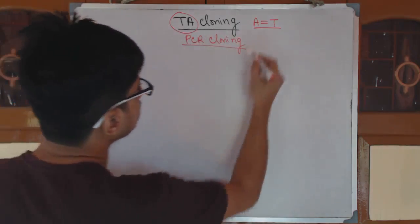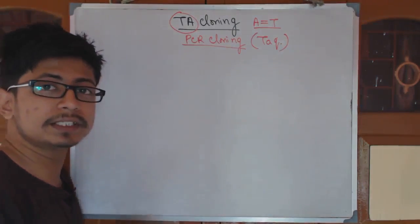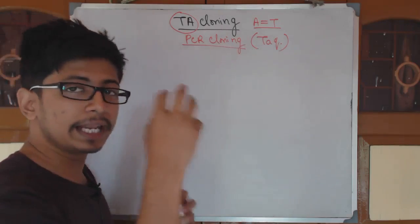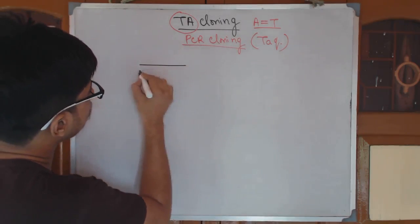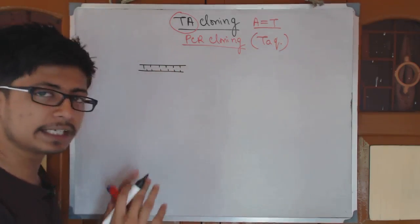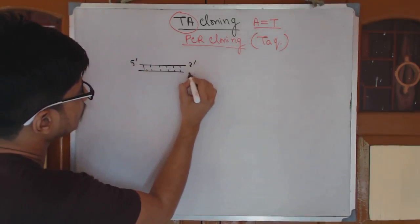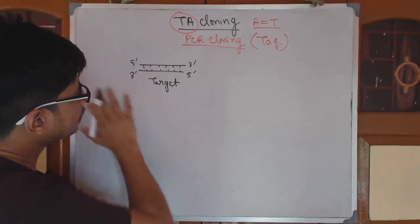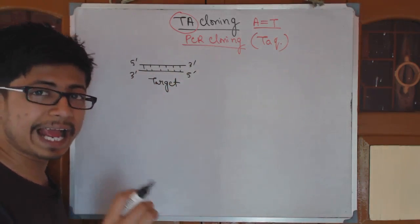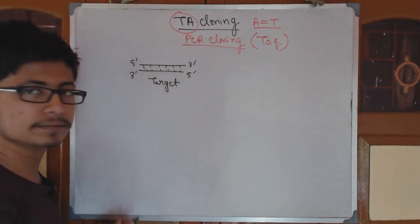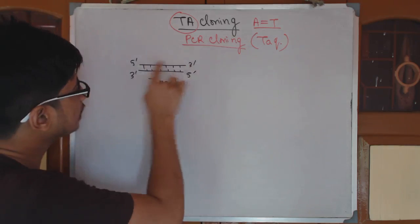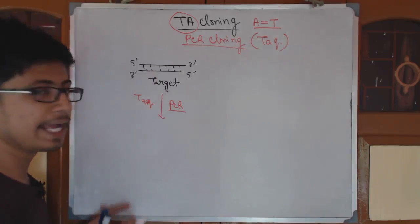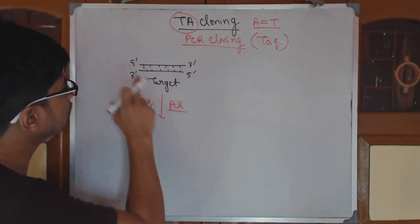Those are known as Taq polymerase — Taq polymerase or Thermus aquaticus polymerase, a polymerase taken from the Thermus aquaticus bacteria. We take this Taq polymerase and allow the whole PCR process to run. Once the PCR process is complete and the target DNA is made, what we do is we simply add an adenine at the 3' end — one extra adenine residue at the 3' end after the PCR. Through the whole PCR process, we allow the Taq polymerase itself to bind and attach one extra adenine residue at the 3' ends.